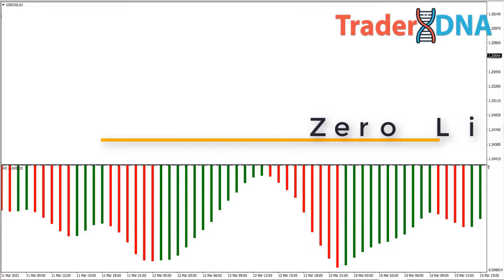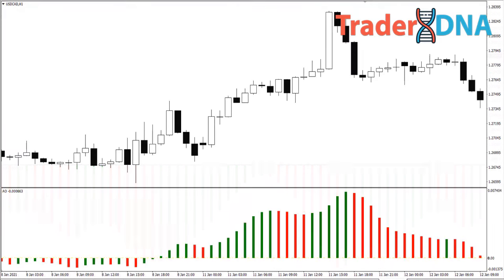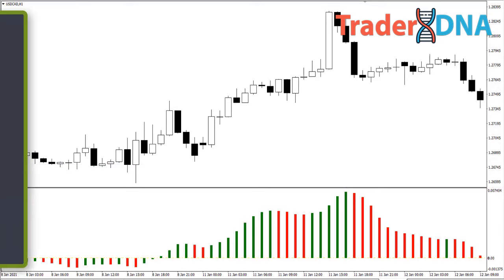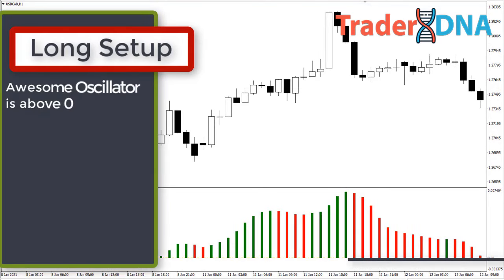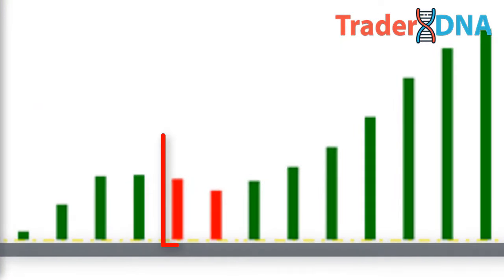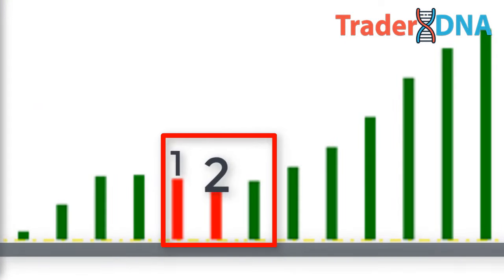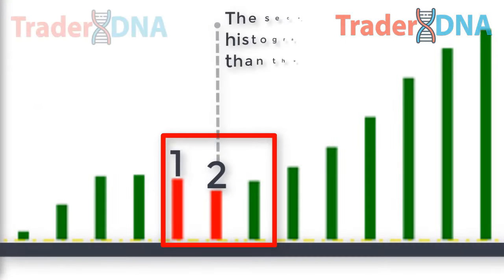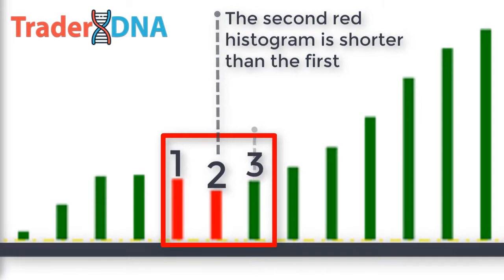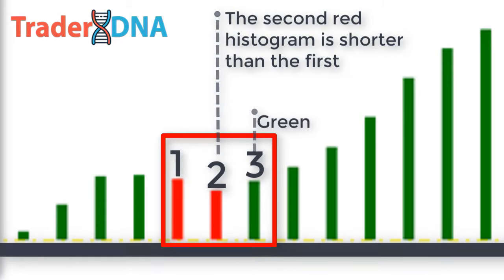The Awesome Oscillator Saucer setup for a long position can be identified as follows: the Awesome Oscillator is above zero, there are two consecutive red histograms, the second red histogram is shorter than the first, the third histogram is green, and the trader buys on the open of the fourth candlestick.